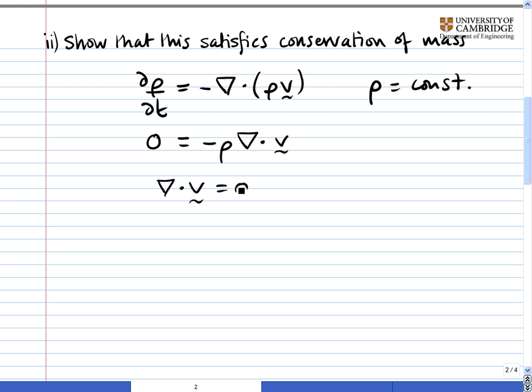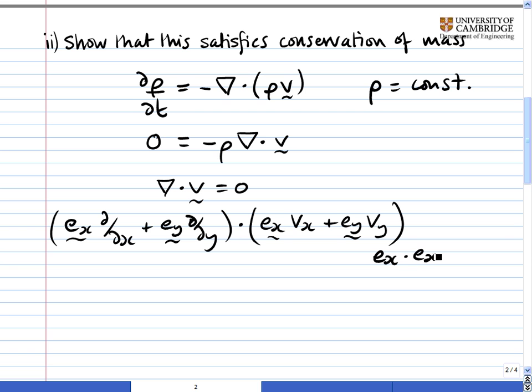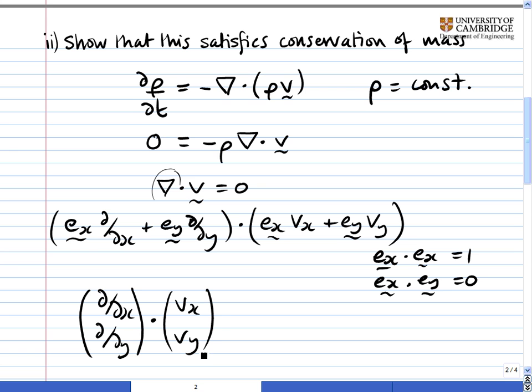Now the strict way of writing out this expression in Cartesian coordinates is this. And then we work that out, noting that ex dotted with ex is equal to 1, and ex dotted with ey is equal to 0. Now in Cartesian coordinates, but only in Cartesian coordinates, you can use a shorthand for this. You can say that this is equal to d by dx, d by dy. That's the nabla operator there, or the upside-down triangle, dotted with vx, vy, written as a vector like that.